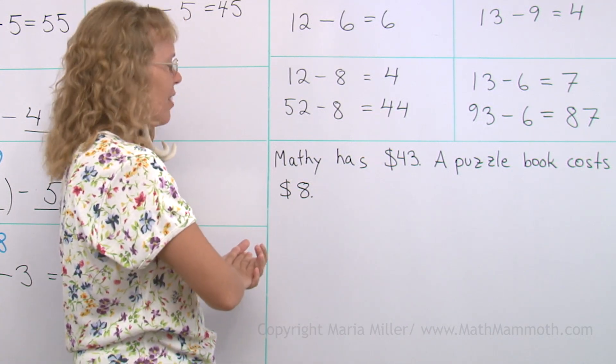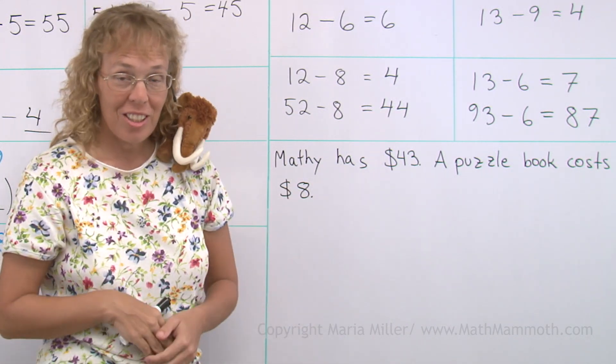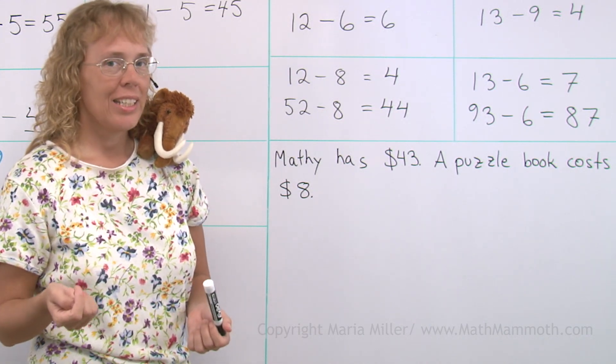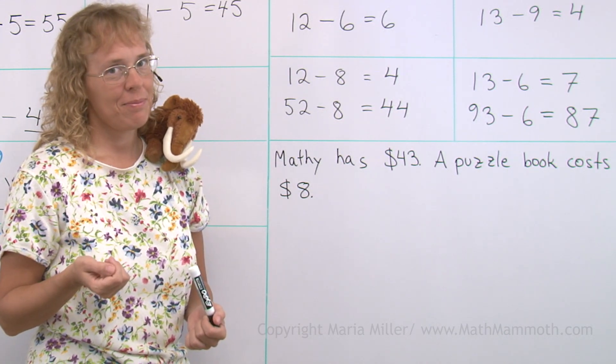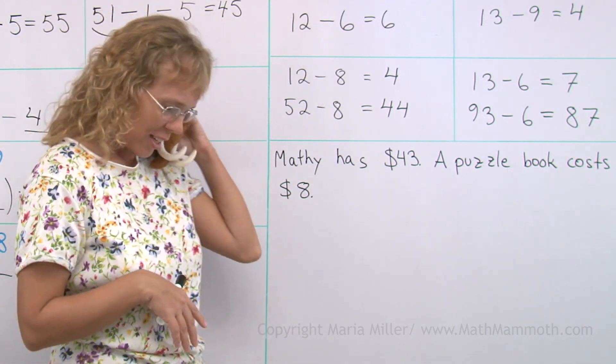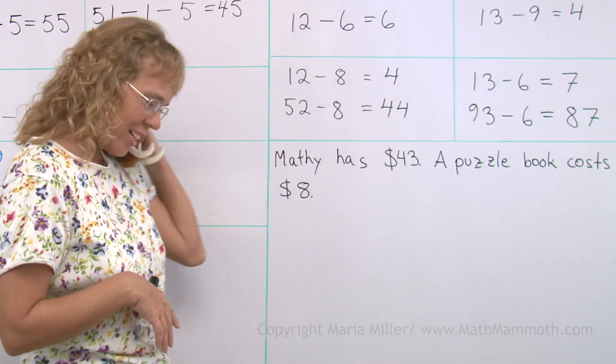What could we ask? Of course, one thing that comes to my mind is, if Mathie has $43 and he goes to buy that puzzle book, then how much money does he have left? Do you have any other questions we could ask? Mathie has one.